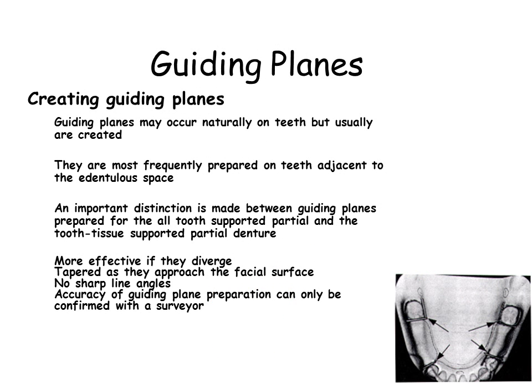Guiding planes rarely occur naturally, and almost without exception must be prepared, usually on the mesial and/or distal interproximal surfaces adjacent to the edentulous space. They are more effective if widely spaced and diverge in the buccolingual orientation. The guiding plane does not result in the creation of a sharp proximal line angle, and the accuracy of preparation can only be verified with the dental surveyor.